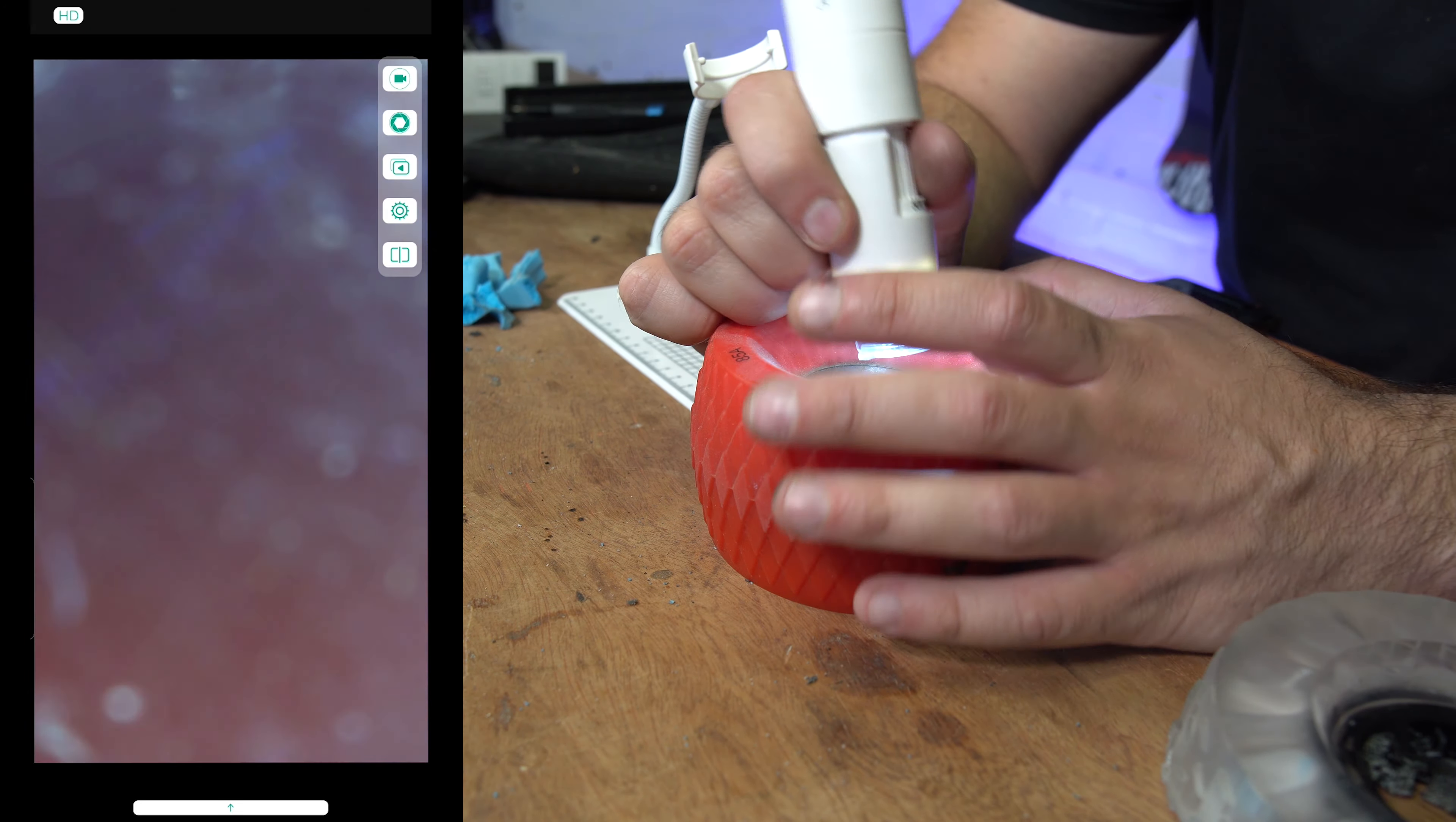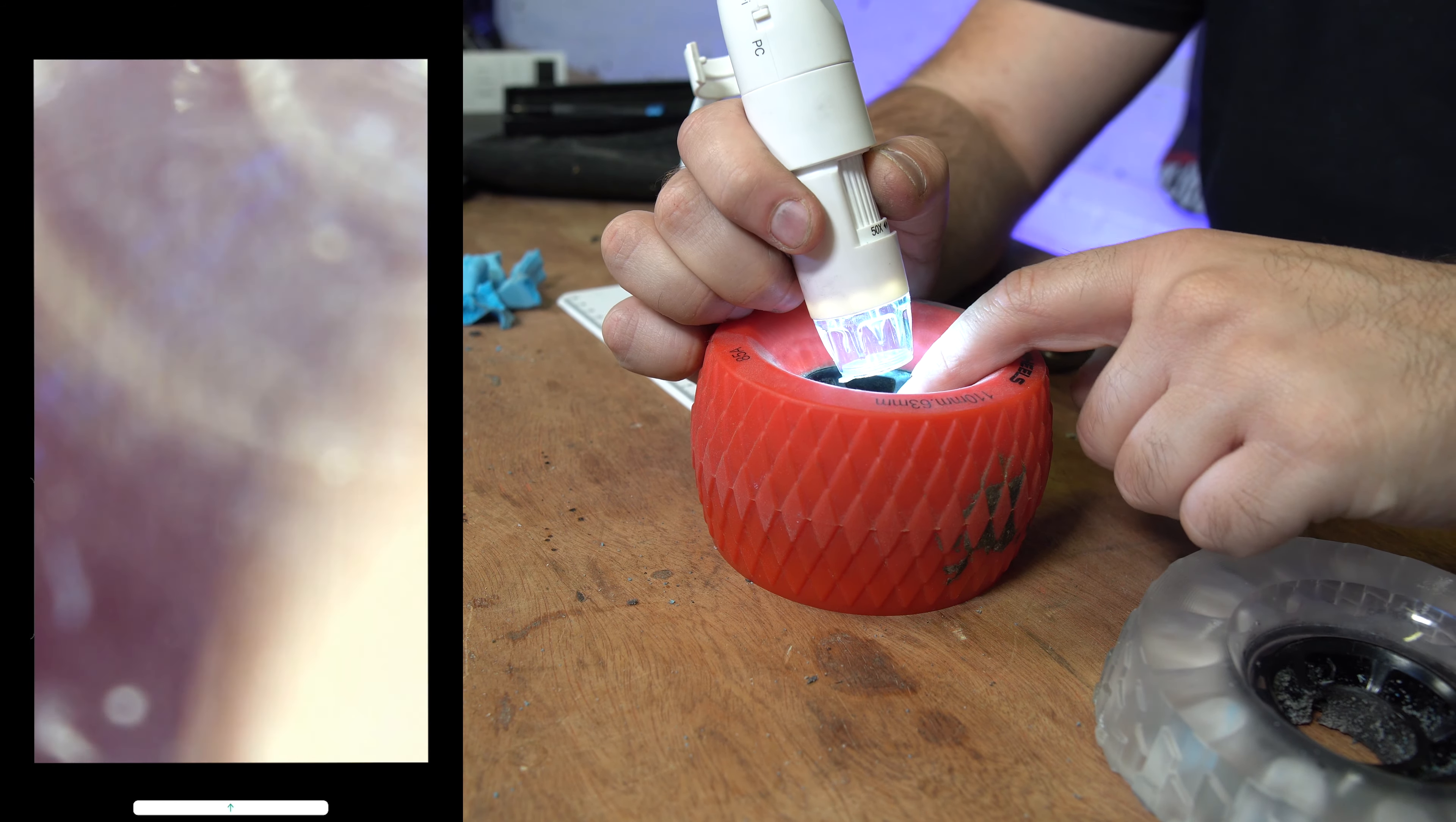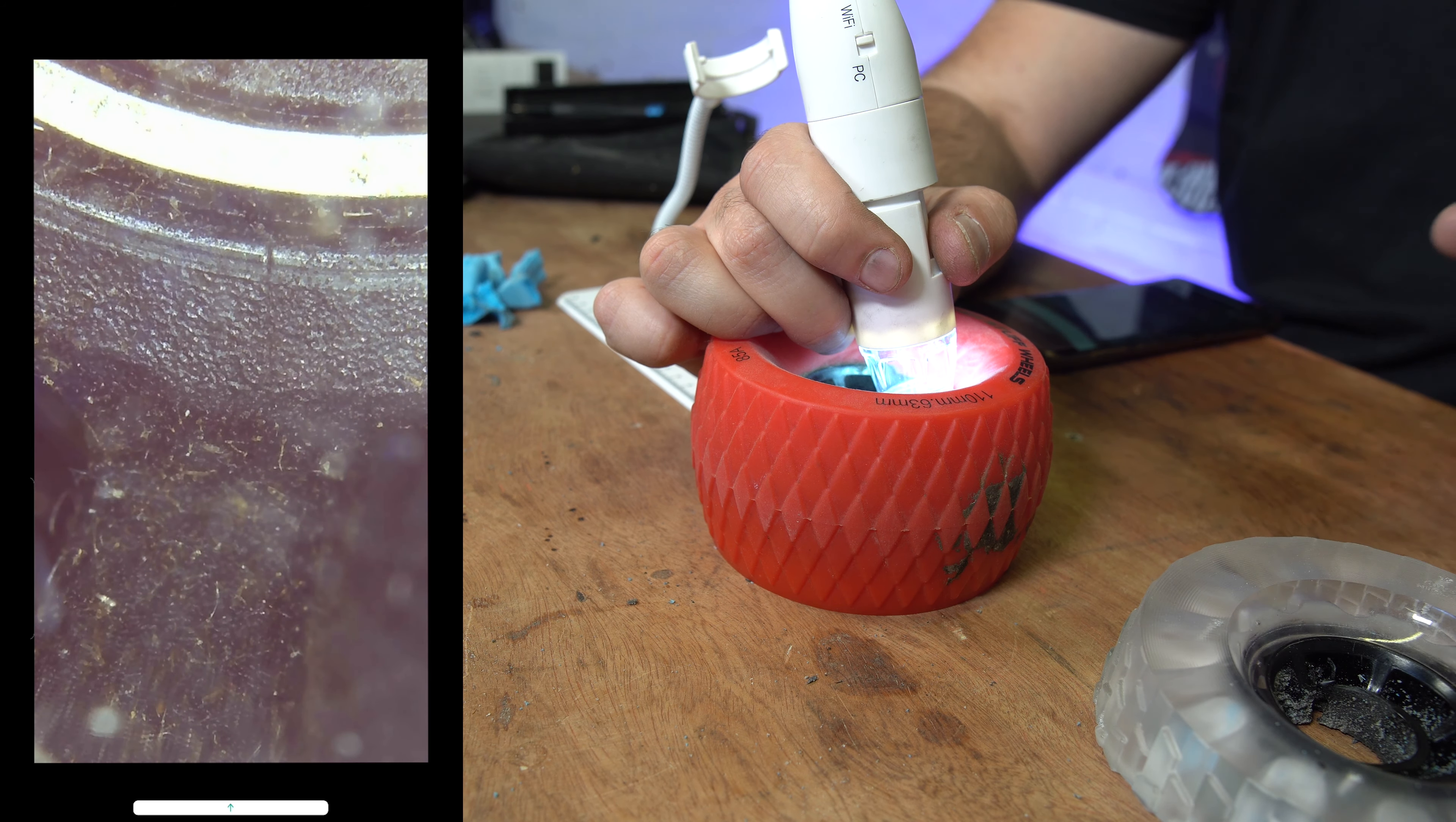Is that a different core material? This is obviously the bearing, this bit guys, but what we're interested in is this piece here. So that's the slick rough stuff first generation. That's the cloud wheel core.